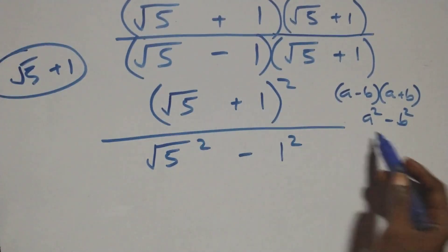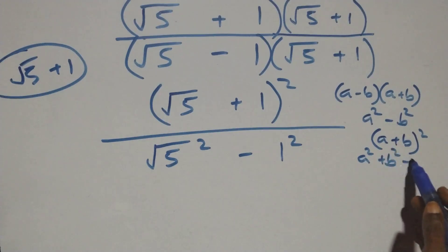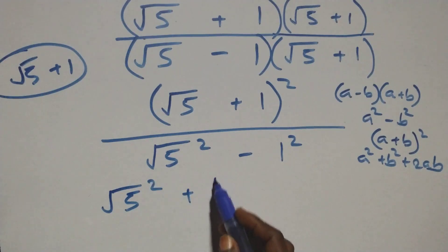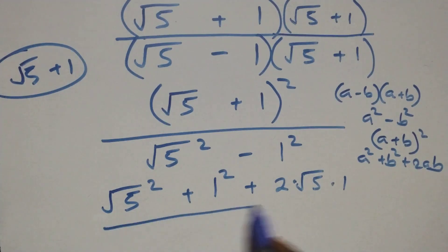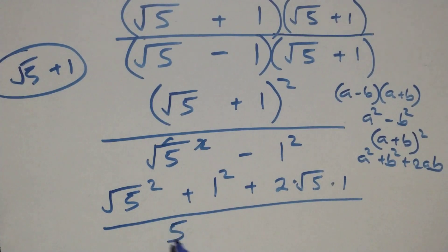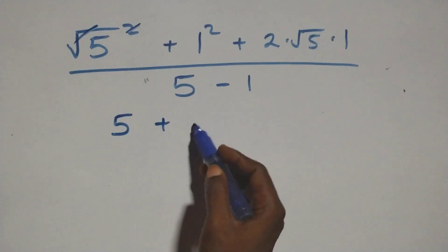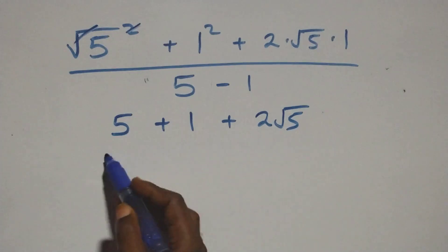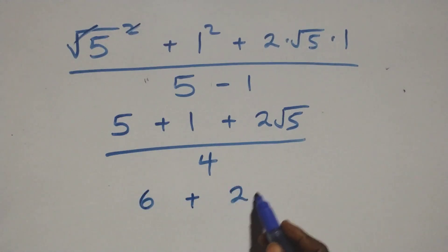Expanding the numerator using the identity (a plus b) squared equals a squared plus b squared plus 2ab, we get: root 5 squared plus 1 squared plus 2 times root 5 times 1. The square root and square cancel each other, giving us 5, and 1 squared is 1, so we have 5 plus 1 plus 2 root 5. The denominator becomes root 5 squared minus 1 squared, which is 5 minus 1 equals 4.